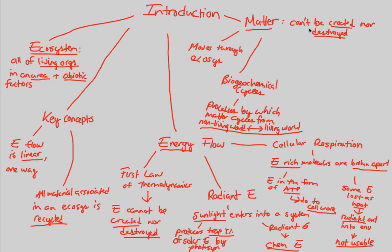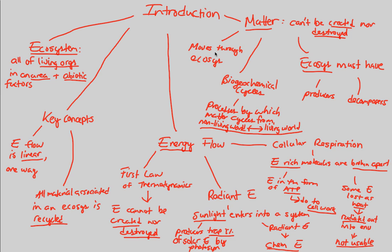In terms of matter, an ecosystem must have two big components in order to work as a biological system: it must have the lowest level of producers, and it also must have decomposers. These two will play a critical role in the overall energetic flow, in the overall idea of recycling, and in the overall conversion of matter and energy as we move forward and see them play out their roles in the ecosystem.